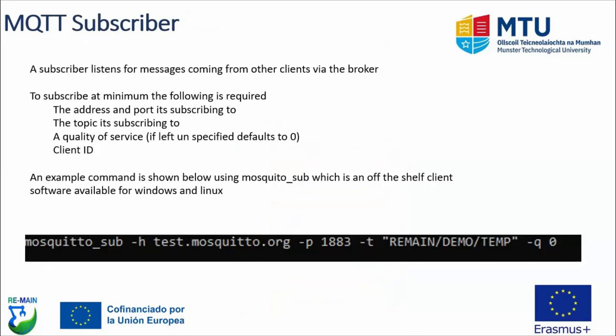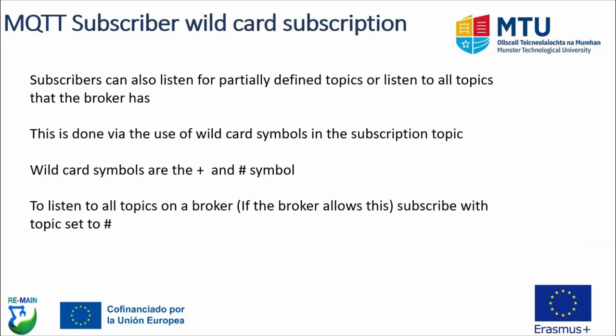Subscribers listen for messages coming from other clients via the broker. To subscribe, a client needs at minimum: the broker address and port, the topic it is subscribing to, the quality of service (defaults to zero if unspecified), and a client ID (auto-generated if left empty). An example is shown using the Mosquitto sub command, specifying address test.mosquitto.org, port 1883, a topic, and a quality of service. The client ID is present but not manually specified in this instance.